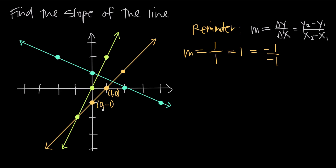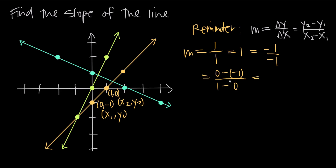If we call (0, -1) the point x-sub-1, y-sub-1, and we call (1, 0) x-sub-2, y-sub-2, then we plug into the formula. m equals y-sub-2, which is 0, minus y-sub-1, which is negative 1, over x-sub-2, which is 1, minus x-sub-1, which is 0. Simplifying: 0 minus negative 1 is the same as 0 plus 1, and 1 minus 0 is 1, giving us 1 over 1, or 1 — the same answer we found using the graph.